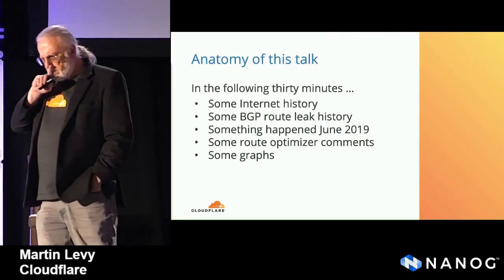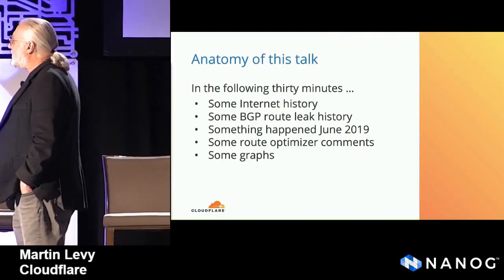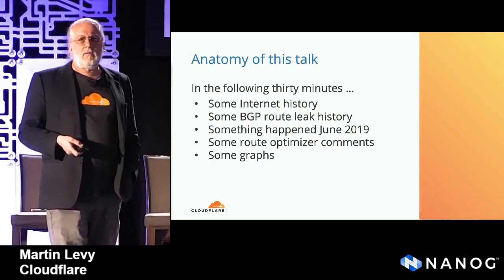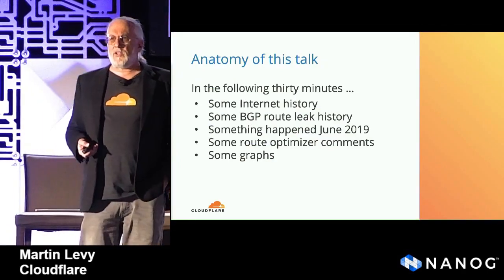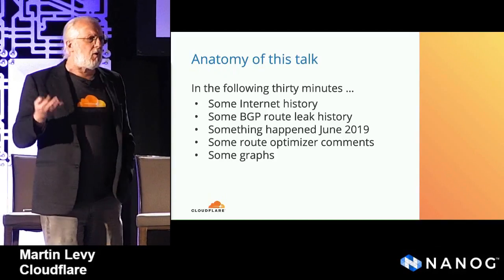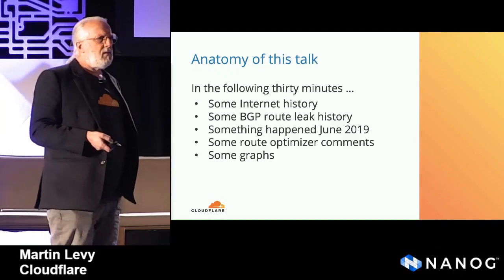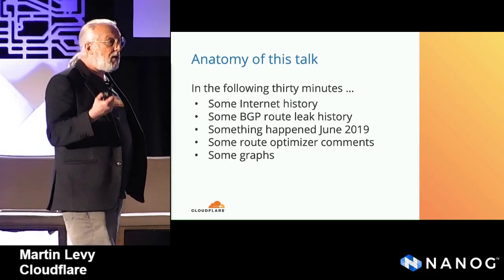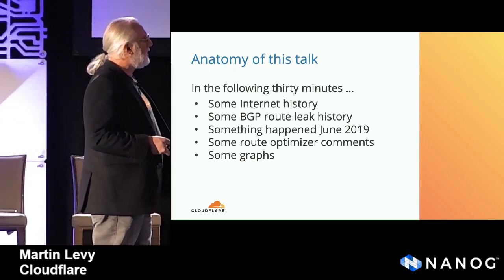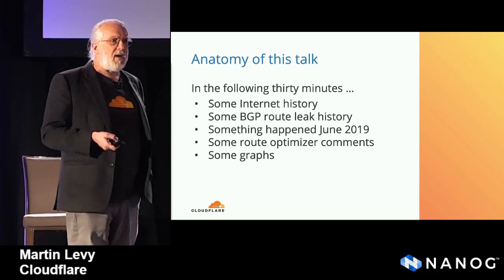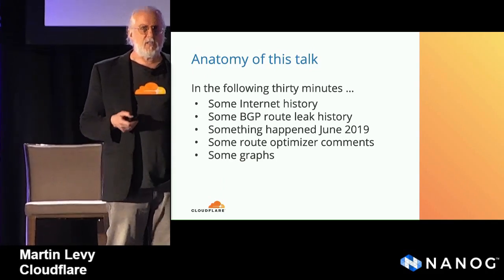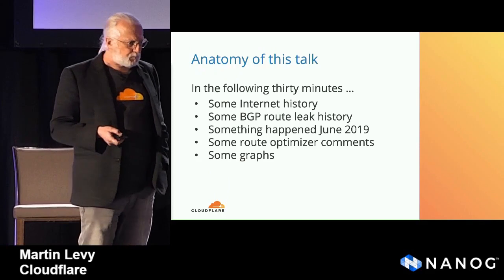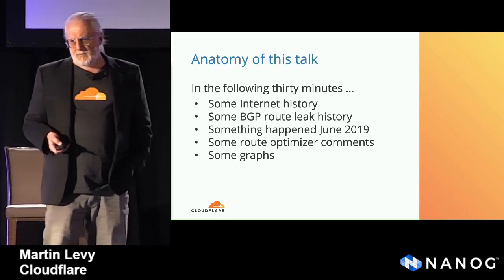In 30 minutes I'm going to give you a bit of internet history — I've got gray hair, I'm allowed to do that. I'm going to talk about some leak history, and there won't be anything surprising there. Then I'm going to talk about what happened June last year, the subject of route optimizers, and I've got some graphs.